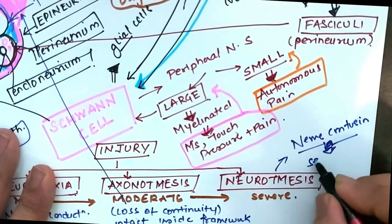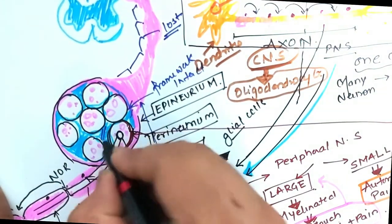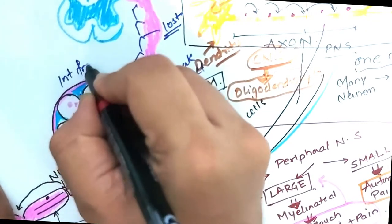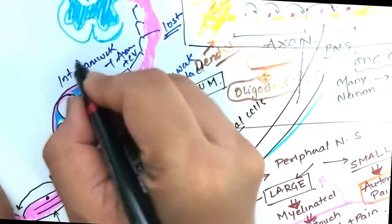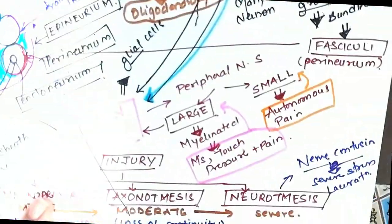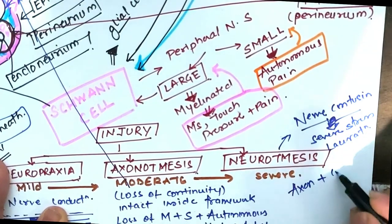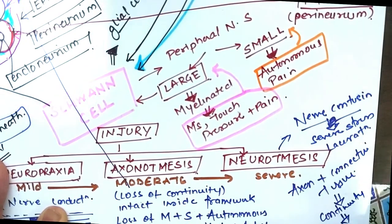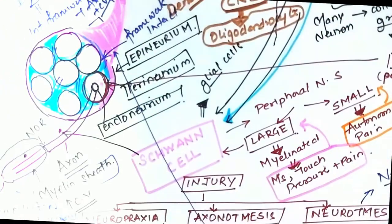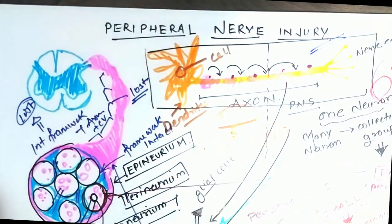The next injury is the most severe form - neurotmesis. This happens due to either nerve contusion, sudden stretch, or nerve laceration. Now in this, the covering over the fasciculi, that is the perineurium, plus the axonal sheath gets damaged. So there is a discontinuity in the entire framework of the nerve fibers.